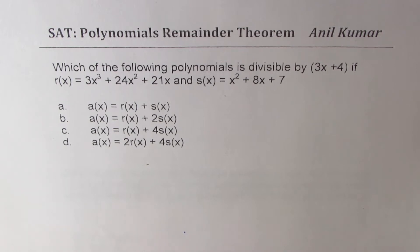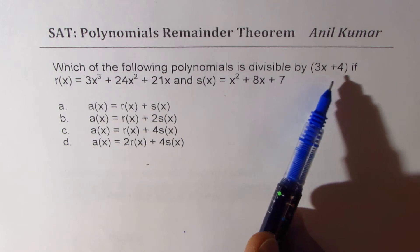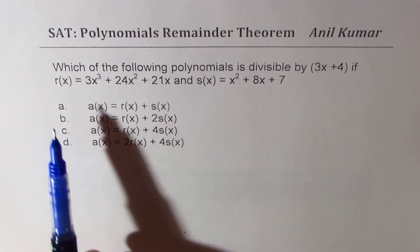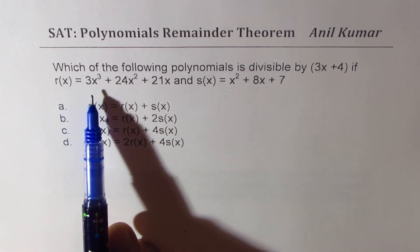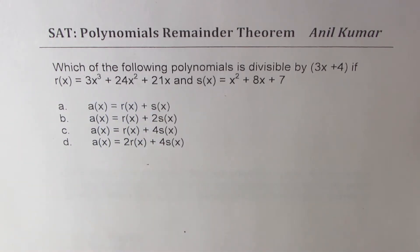The question here is which of the following polynomials is divisible by 3x plus 4 if r(x) equals 3x³ plus 24x² plus 21x and s(x) equals x² plus 8x plus 7. The four choices are given to you.